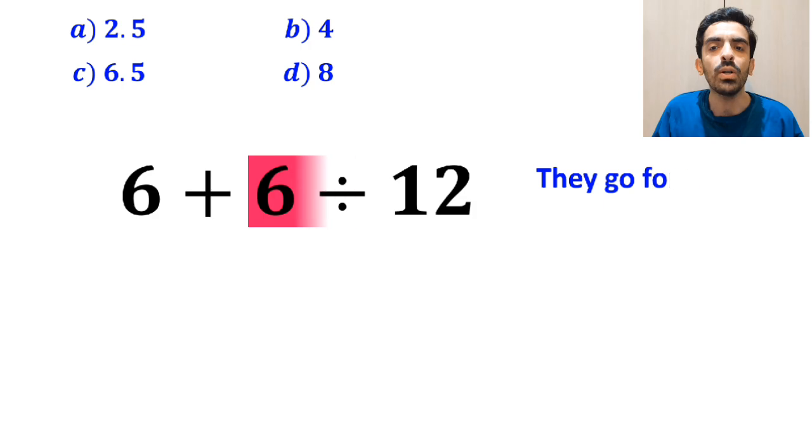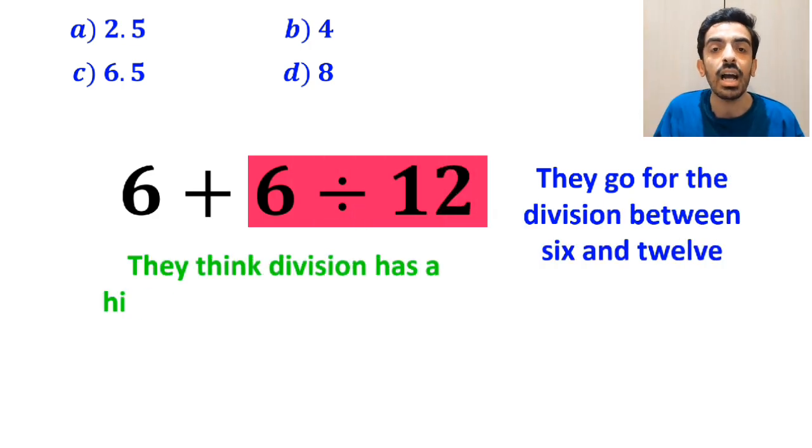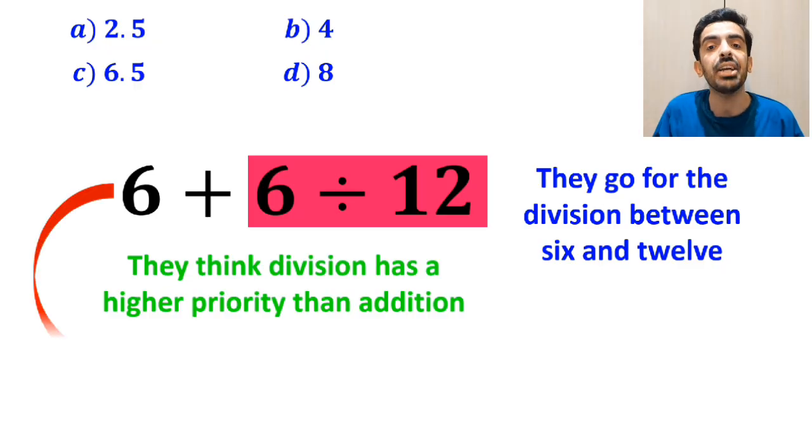Then, they go for the division between 6 and 12 because they think division has a higher priority than addition. And they write this expression as 6 plus 0.5 which ultimately gives them the answer 6.5